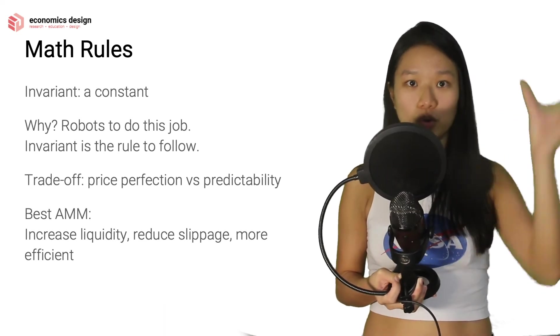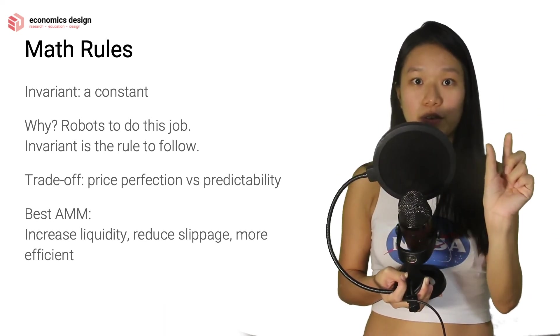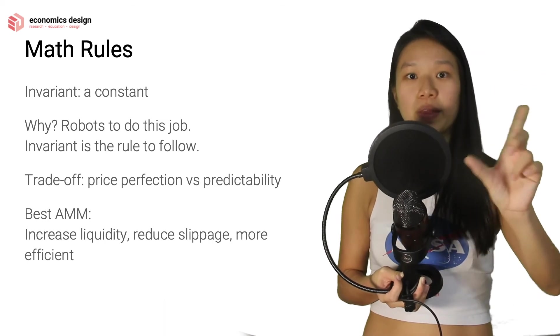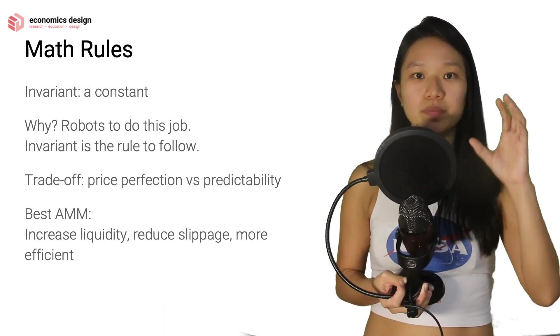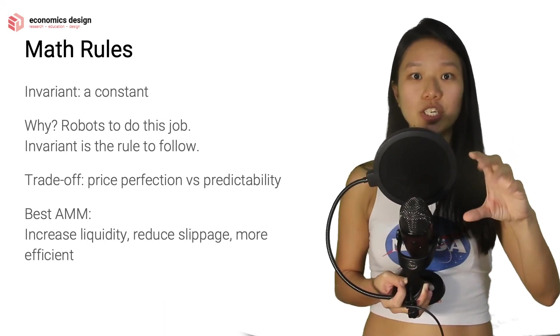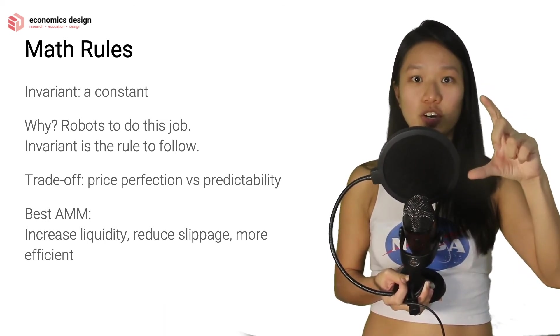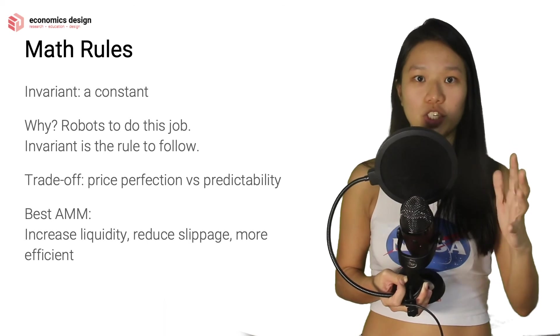As opposed to the opposite of a pyramid where the bottom is very thin and the top is very broad, then it topples very easily. It's the same concept, where when you have increased liquidity, then you're increasing the size of your denominator, so your pyramid is a lot more stable.